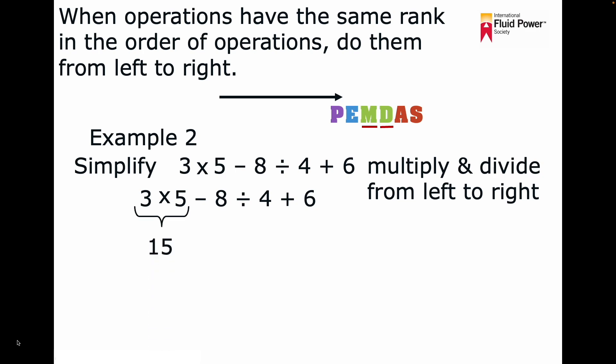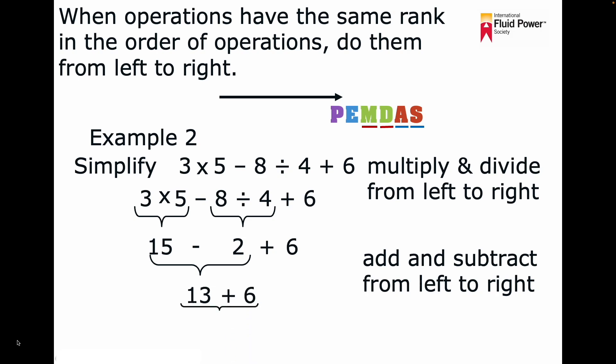So when we look at that simplified equation, PEMDAS says we add and subtract. Since again, those are equal in order, we go from left to right. Therefore, we subtract 15 minus 2, which equals 13, and then add 6, which equals 19. Therefore, the answer for this equation is 19.